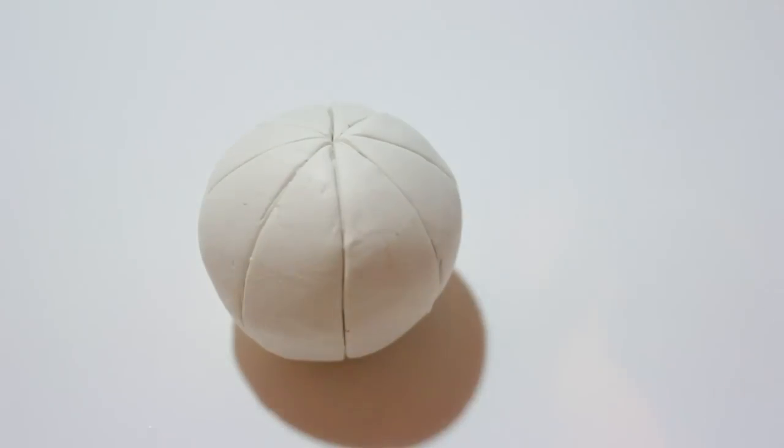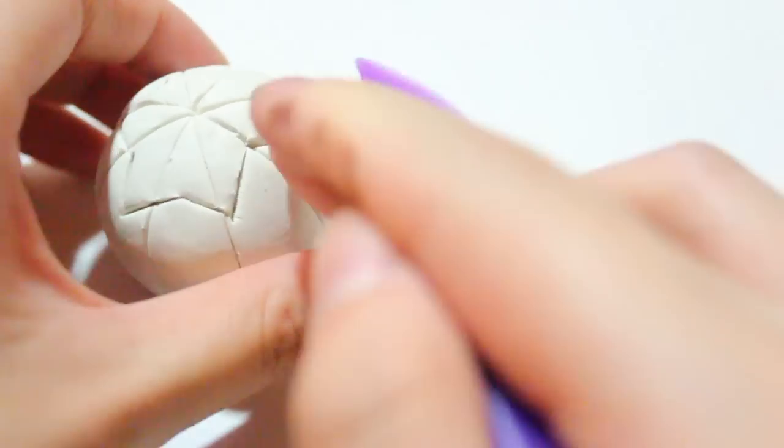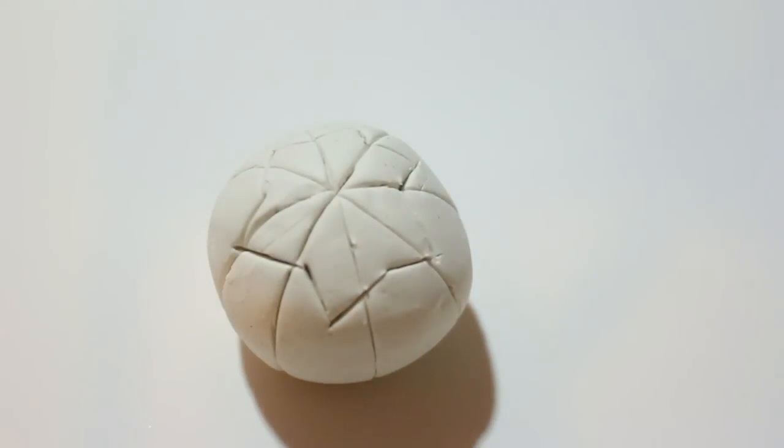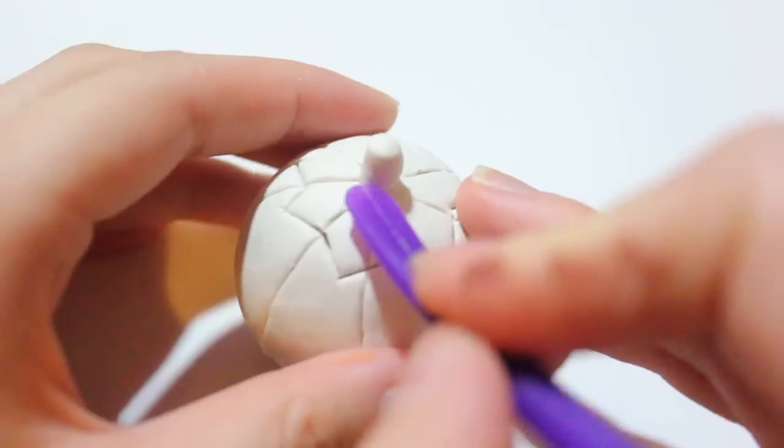Now to open up the pumpkin piece, I'm starting to create this star shape on top with my little blending tool that I got from the Sculpey kit. Then I also added in a little stem and blended it in as well.